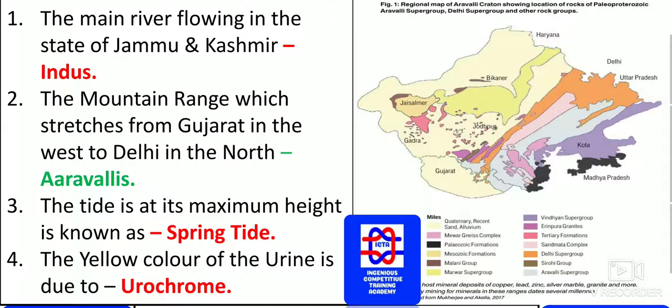The tide at its maximum height is known as spring tide. Now, comment what the term for the lowest tide is — the opposite of spring tide — in the comment section.